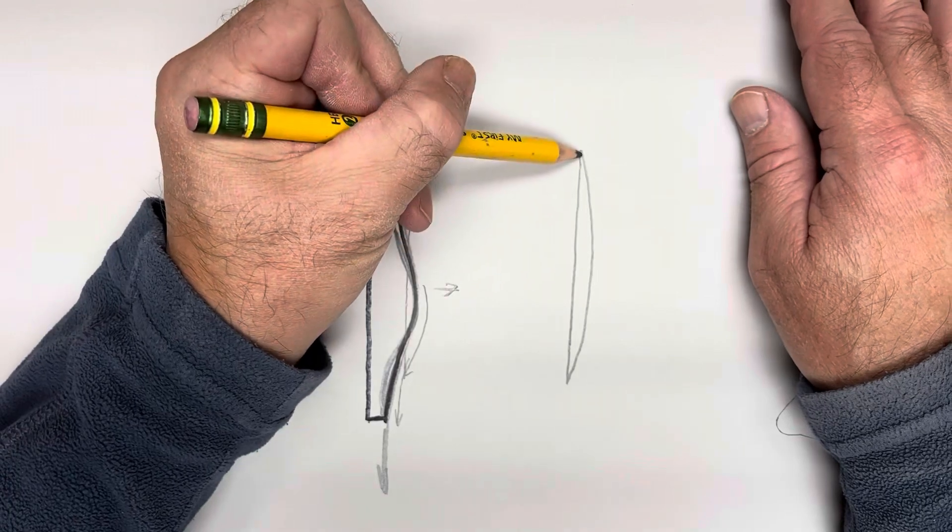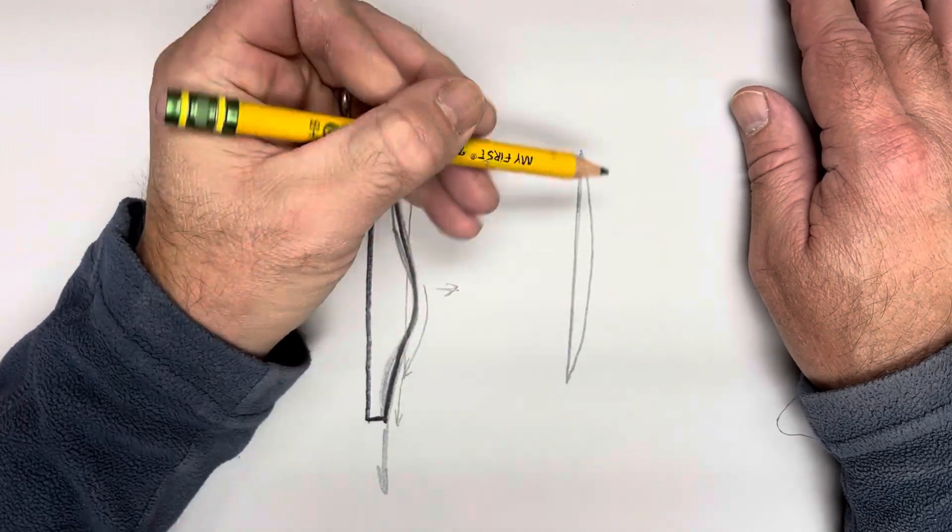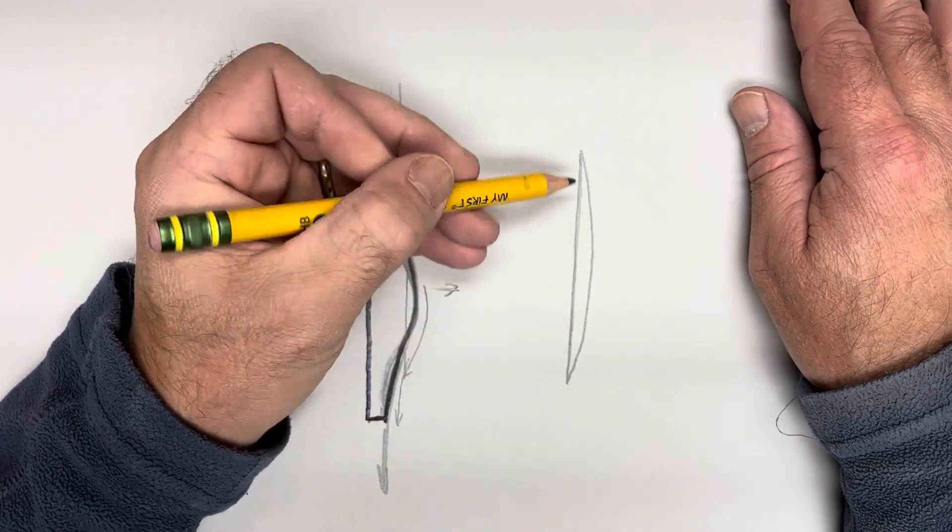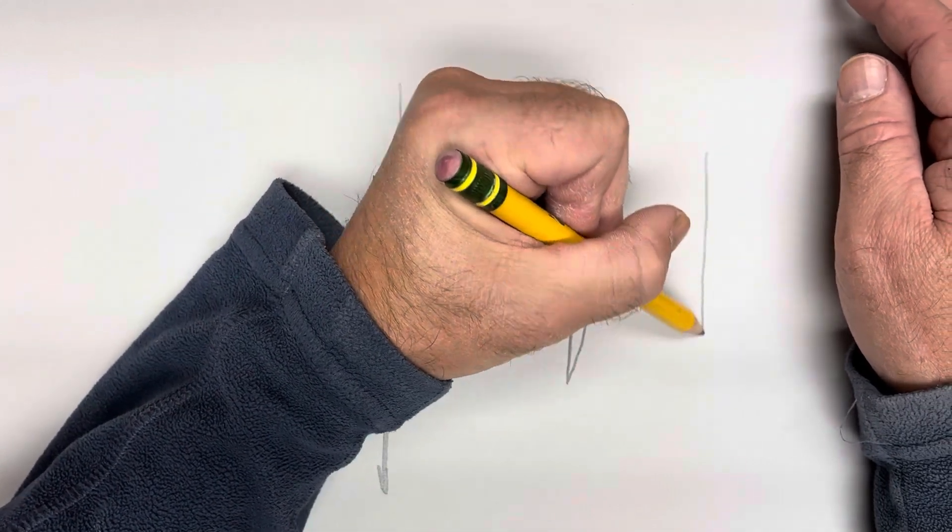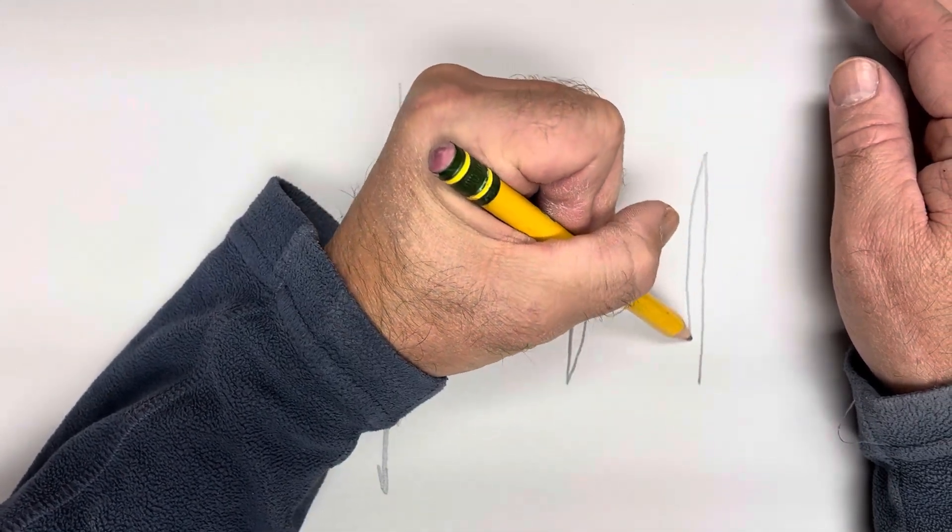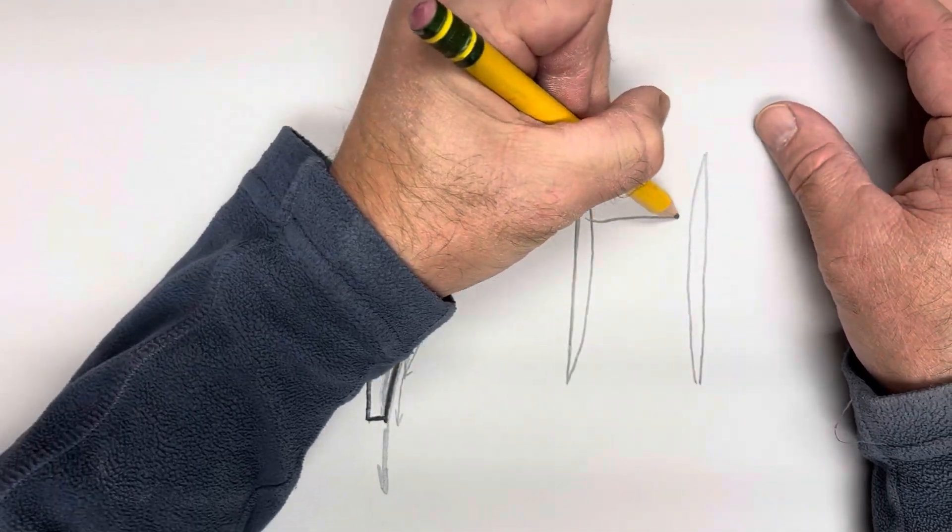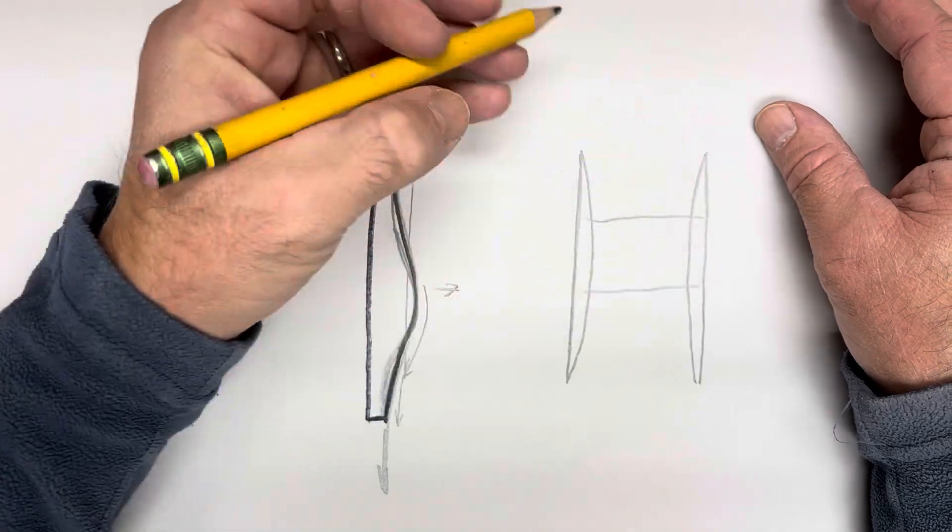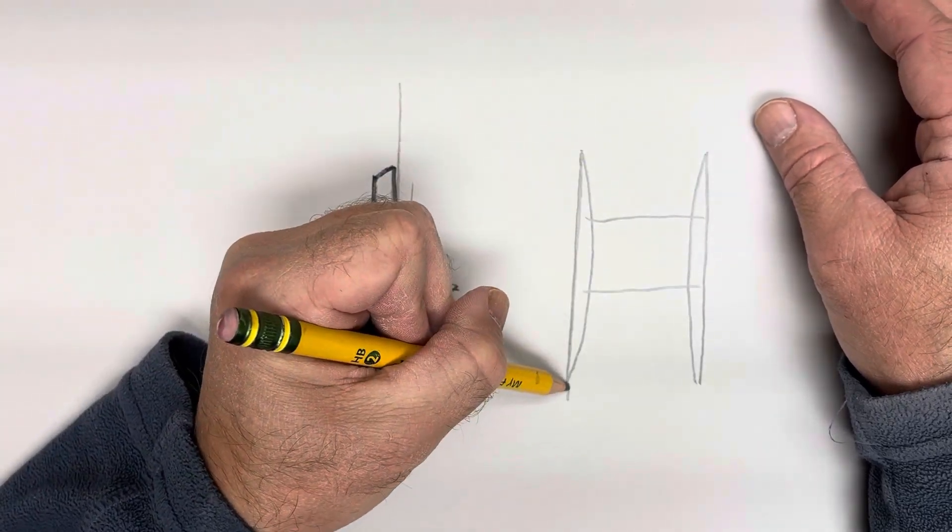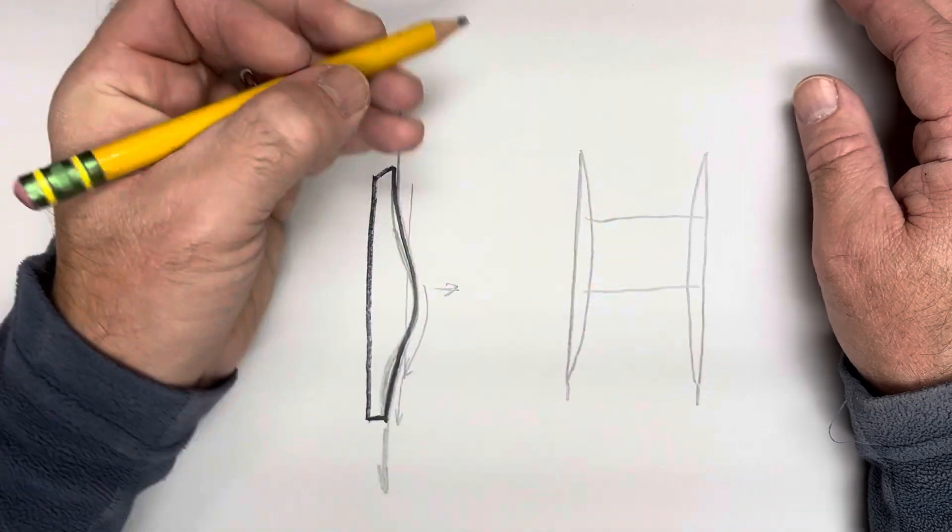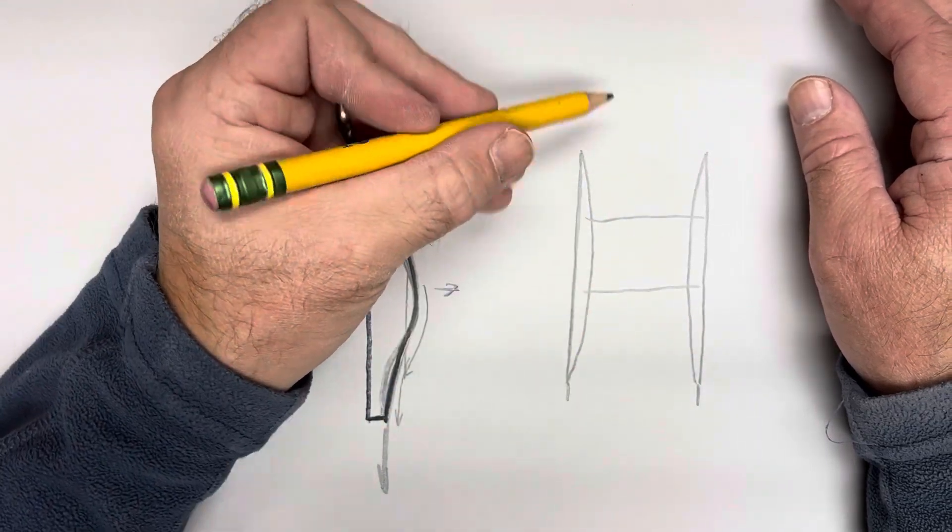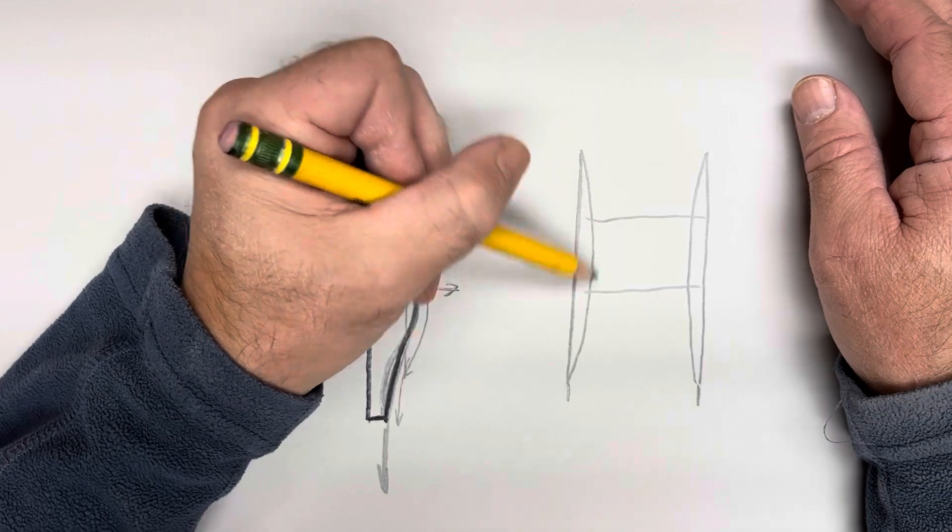So the top view of the hull kind of looks like this - all the curvatures on the inside here. I'll draw the other one.